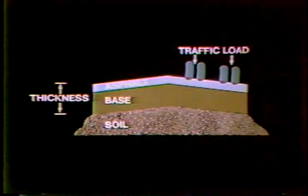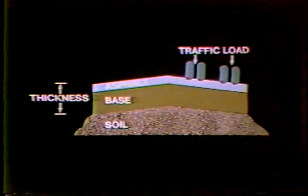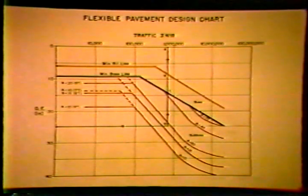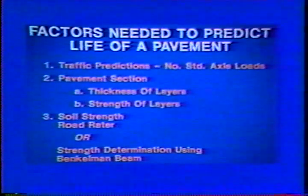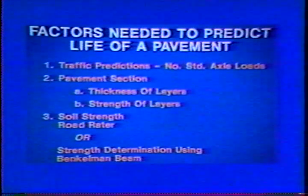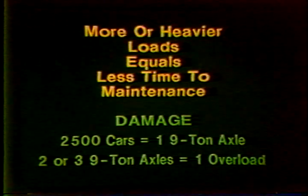The design of highways, roads, and streets is based on many factors including soil type or strength, traffic, and climate. In Minnesota, asphalt pavements are designed to the thickness required to keep the pavement in a condition serviceable to the public over a given design period, usually about 20 years. We design for overlay or rehabilitation after 20 years because environmental effects will usually require maintenance then, regardless of traffic. However, if more or heavier traffic loads use the road than were expected, the road wears out sooner.